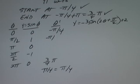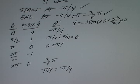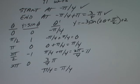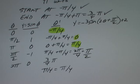So: -π/4 plus π/4 gives us 0; then 0 + π/4 = π/4; then π/4 + π/4 = 2π/4 = π/2. We have our theta values: -π/4, 0, π/4, π/2, and the cycle ends at 3π/4.